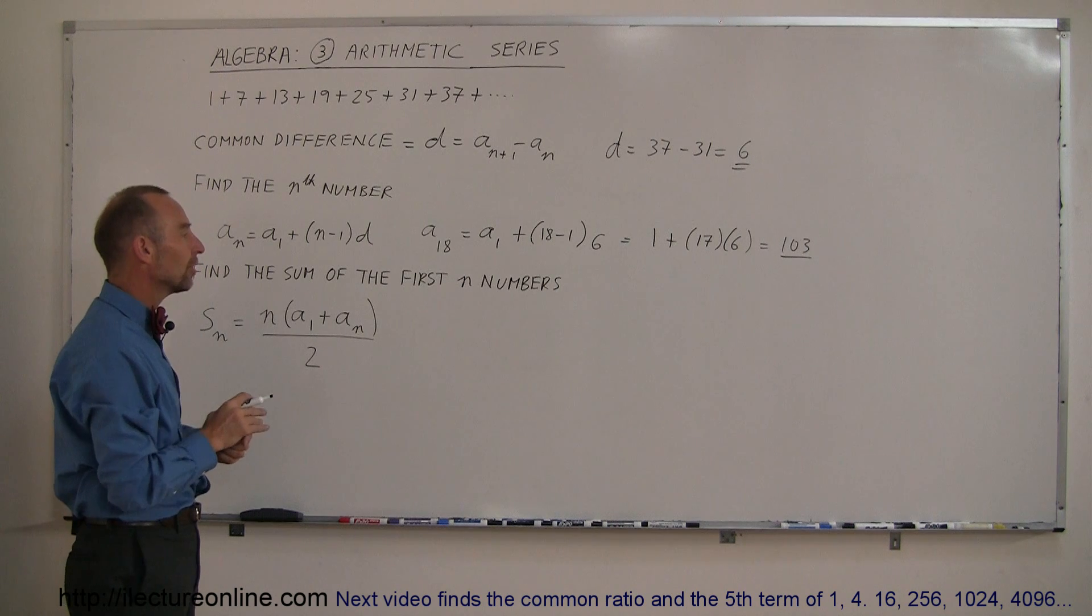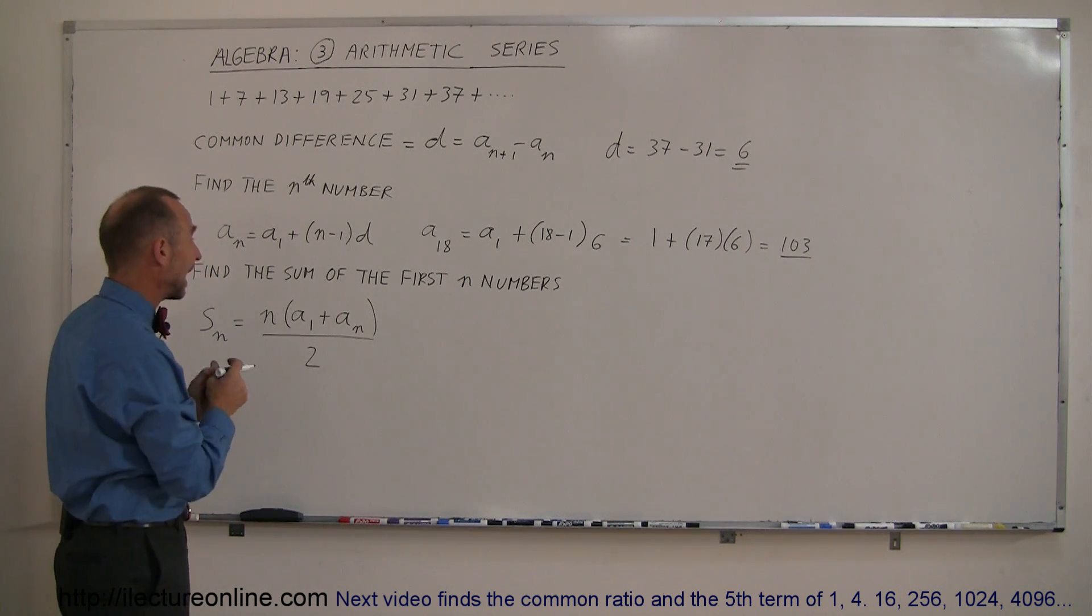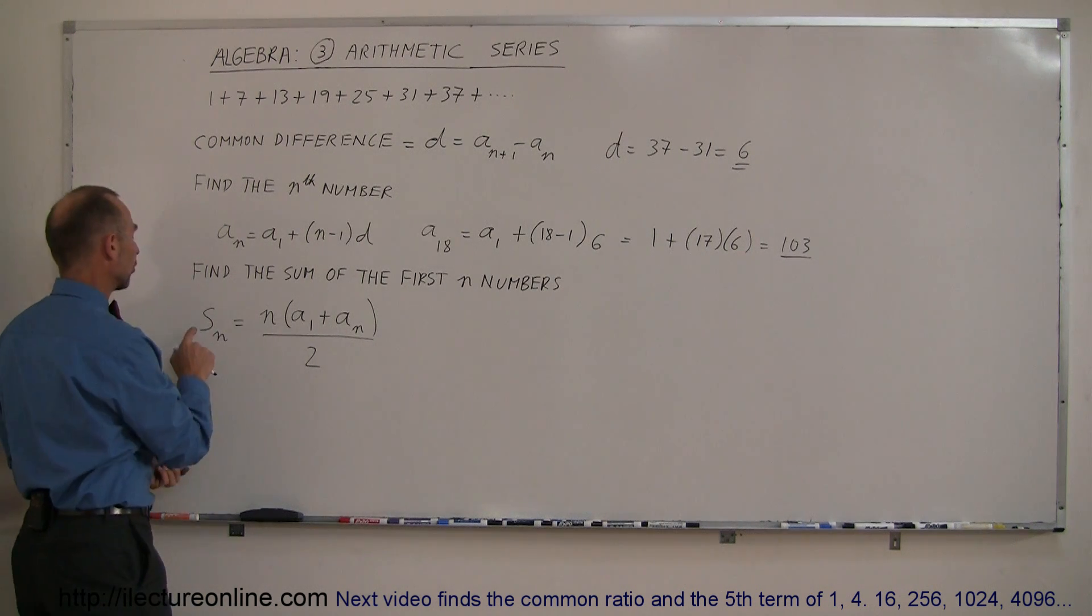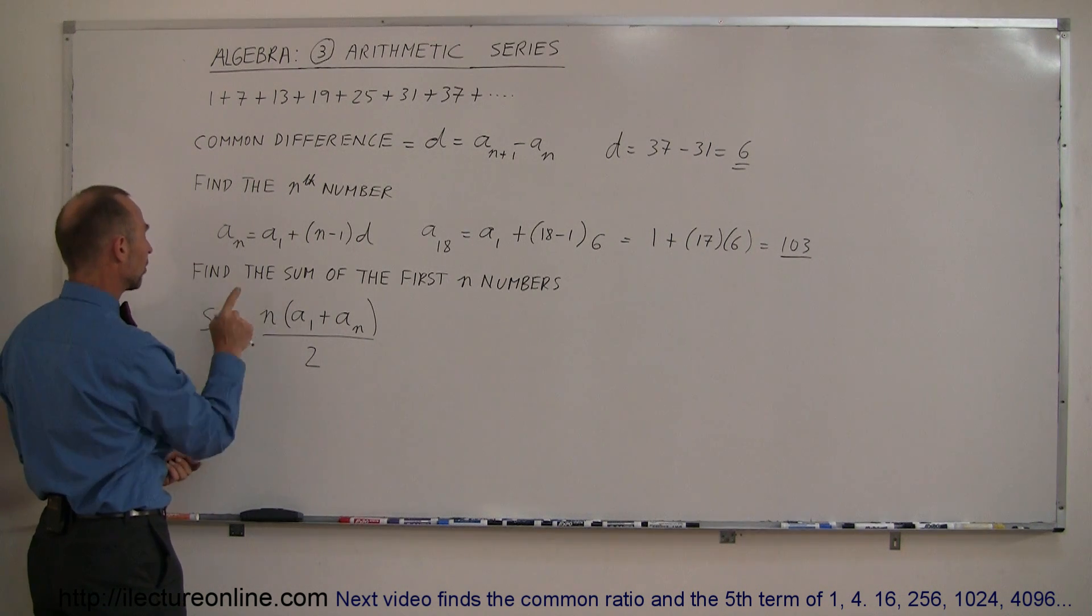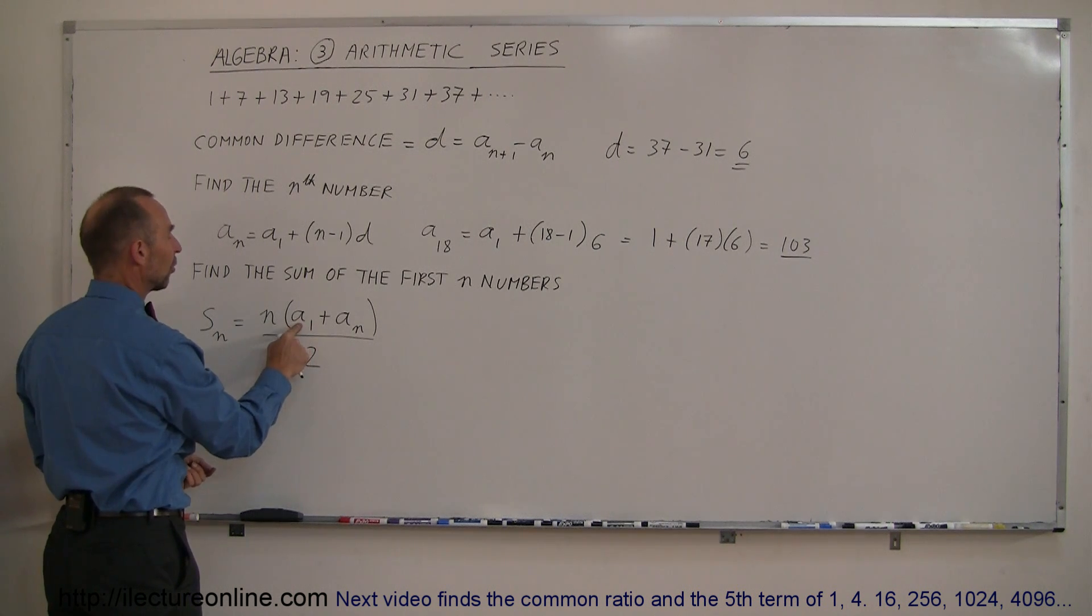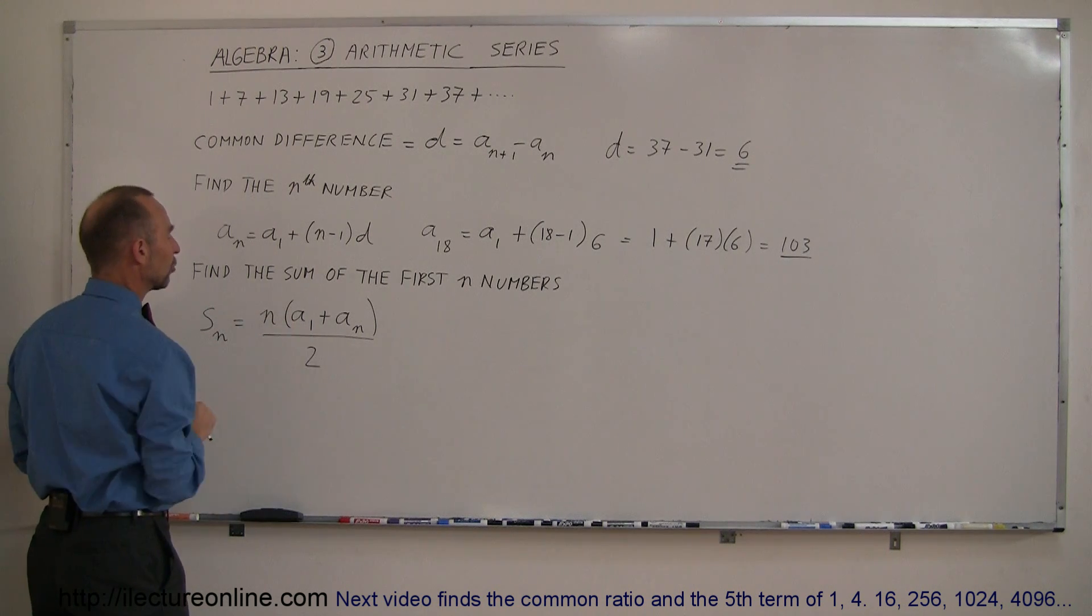But now we can also do one more thing, we can find the sum of the first n numbers, n being any number you want. And so this is the equation right here, so the sum of the first n numbers in the series is equal to the number n times the first one in the series plus the last one in the set that you want to add together, divided by 2.